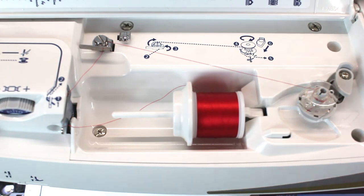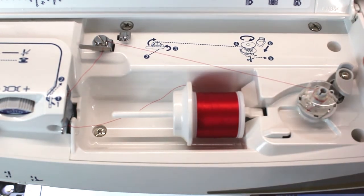Now, I can engage my bobbin winder. It's a simple matter of pulling the little switch forward. That little switch is right here.